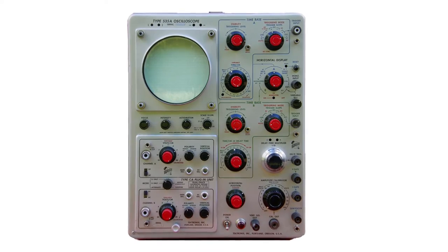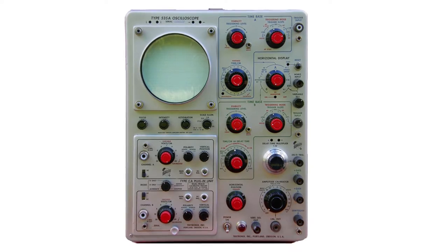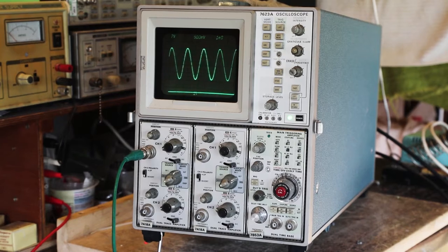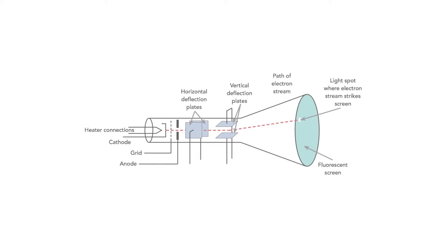The first oscilloscopes to be introduced were analog scopes. These used a cathode ray tube to display the waveforms. The cathode ray tube used thermionic or vacuum tube technology, firing a stream of electrons along the tube. The position of the stream was modified by voltages on the plates along the tube, providing control of the position in both horizontal and vertical axes.